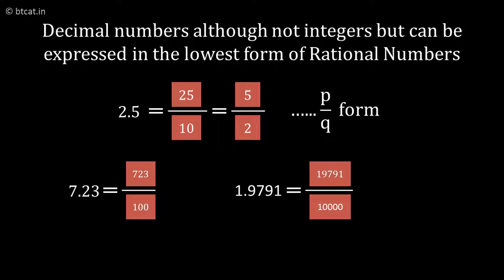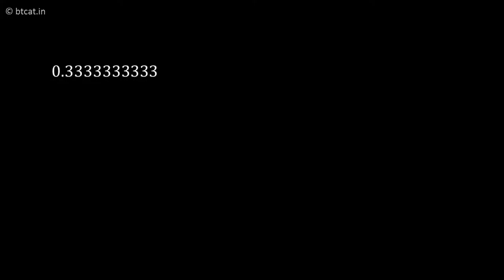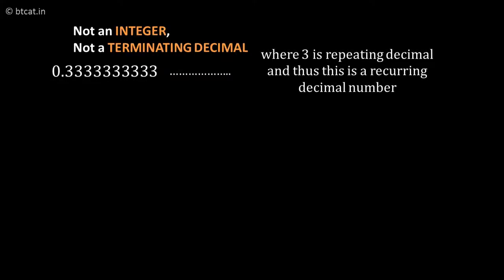So 2.5 is a rational number, 7.23 is a rational number, 1.9791 is a rational number, because I can remove the decimal and divide by that many zeros and cancel it if needed, bringing it to p/q form. So rule number two says: all terminating decimals are rational numbers.